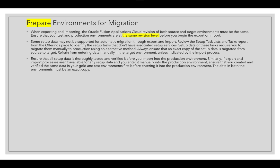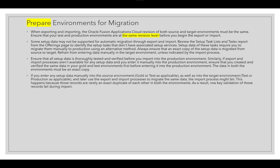The data in both environments must be an exact copy. If you enter setup data manually into the source environment (gold or test) as well as into the target environment (test or production), and later use the export and import process to migrate the same data, the import process may fail. This happens because records are rarely an exact duplicate of each other in both environments — you would be duplicating data that was already migrated manually for the same business objects.